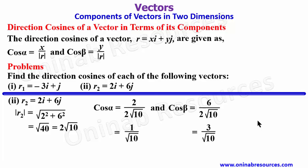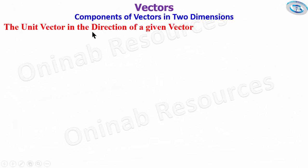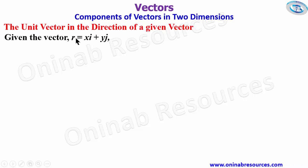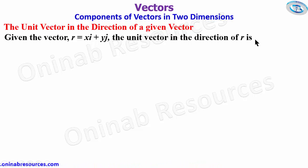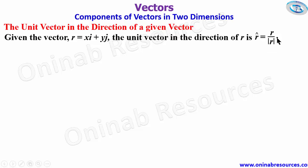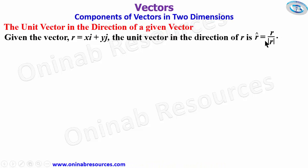We then go to the unit vector in the direction of a given vector. Given the vector r = xi + yj, the unit vector in the direction of r is given as r̂ = r / |r|. For your information, all unit vectors have a magnitude of 1.